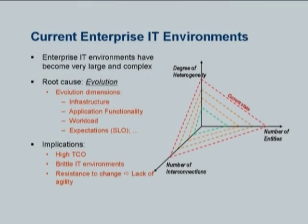This is actually the reason why we have a problem. If you start drawing a simple diagram of complexity of an IT environment, depicted in three dimensions — number of entities you run, number of interconnections, and amount of heterogeneity — you see that over time we are only increasing this complexity. Most enterprises actually operate in a very reactive firefighting mode, going from problem to problem and patch to patch, with very little understanding of exactly what they are dealing with.